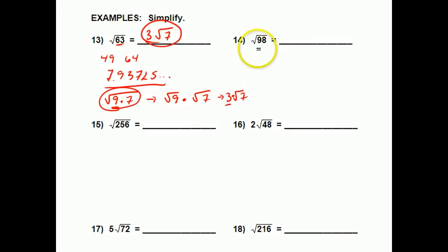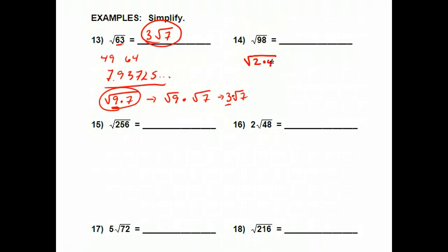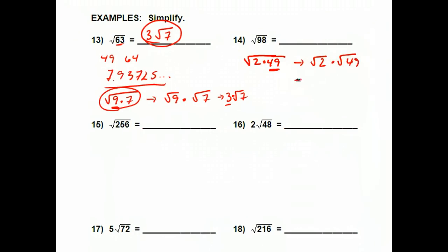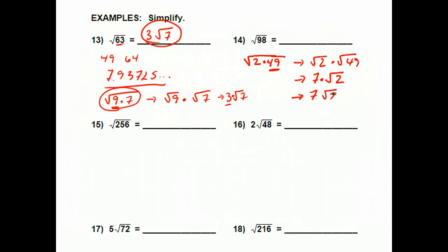Square root of 98 — 98 is a big number, but I do see it divides by 2. So let's write it as 2 times 49. The square root of 49 is a perfect square — it's 7, a rational square root. So I rewrite this as the square root of 2 times the square root of 49, which gives me 7 times the square root of 2. You always write the piece that comes out — the perfect square part — out in front. Most times you'll just write it as 7 root 2.